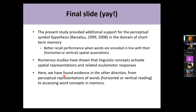The present study provided additional support for the perceptual symbol hypothesis in the domain of short-term memory. We found better recall performance when words are encoded in line with their horizontal or vertical spatial associations. That adds to evidence showing that linguistic concepts activate spatial representations and motoric responses, and here we found evidence in the other direction — from perceptual representations of words during horizontal or vertical reading to accessing their concepts in memory. Thank you very much.